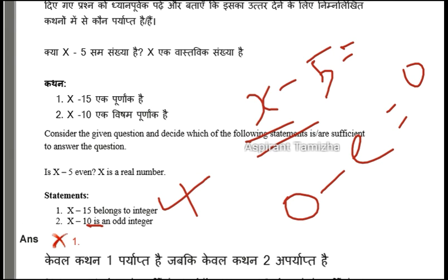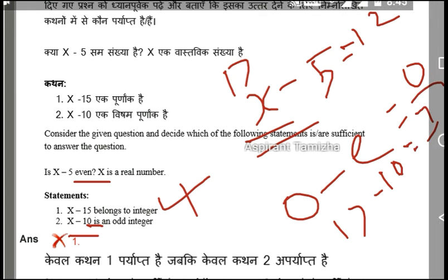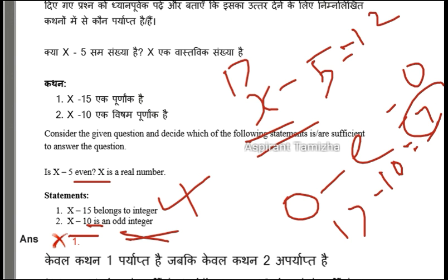The x is equal to 17. 17 minus 5 is equal to 12. The status of r is equal to 7. 7 happens with r equal to 10. If your x minus 15 is equal to x equal to 10, this means that when you have nothing else to choose r, that means r is equal to 1. That means r is equal to 10.